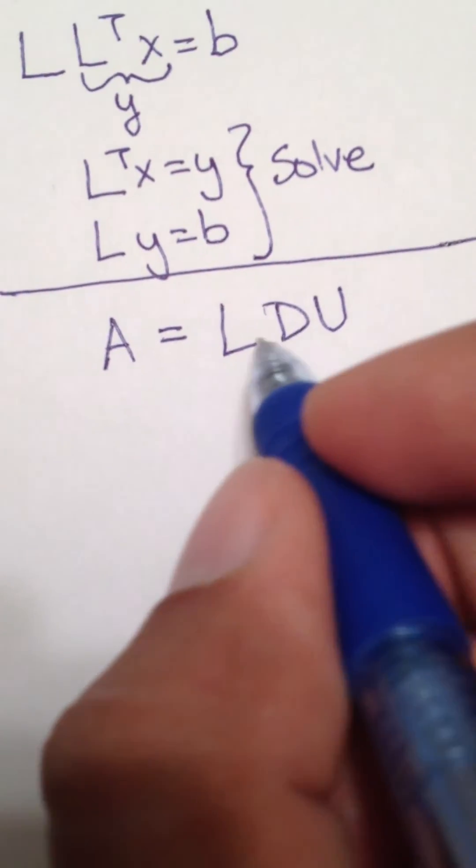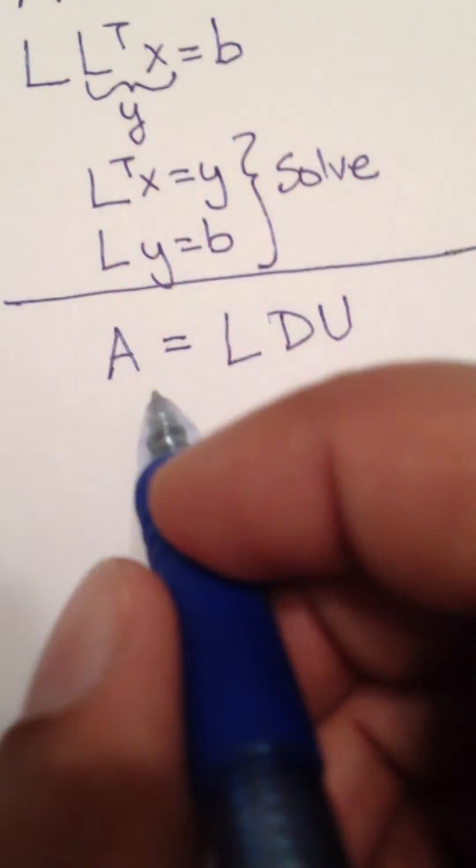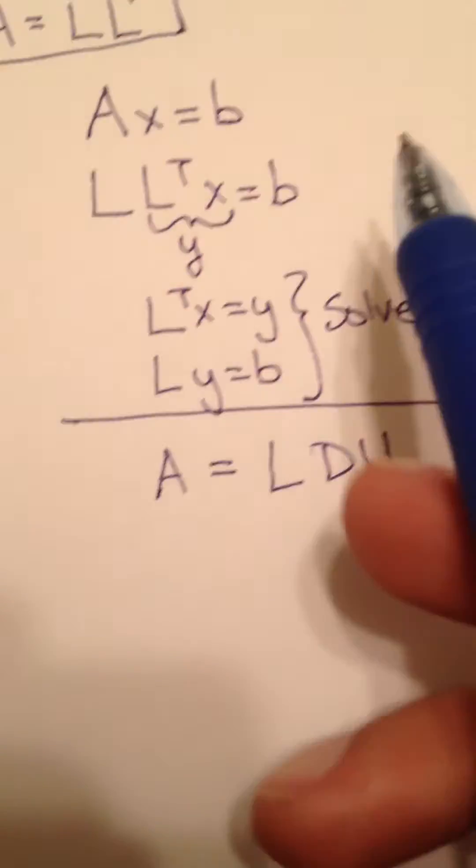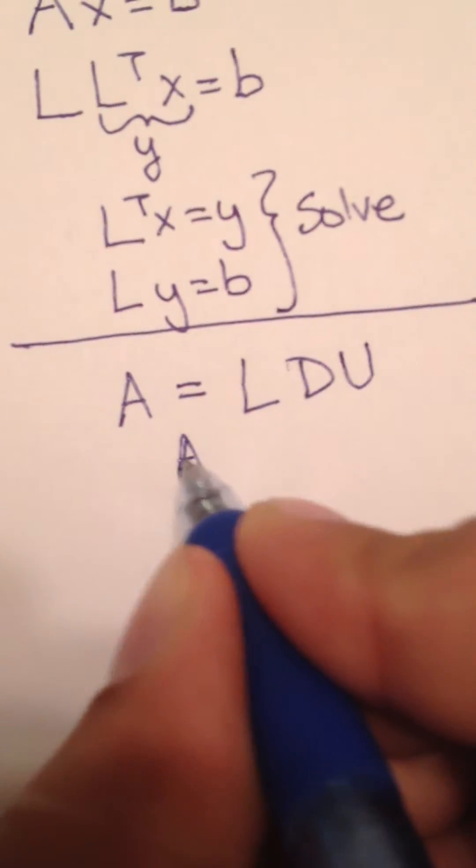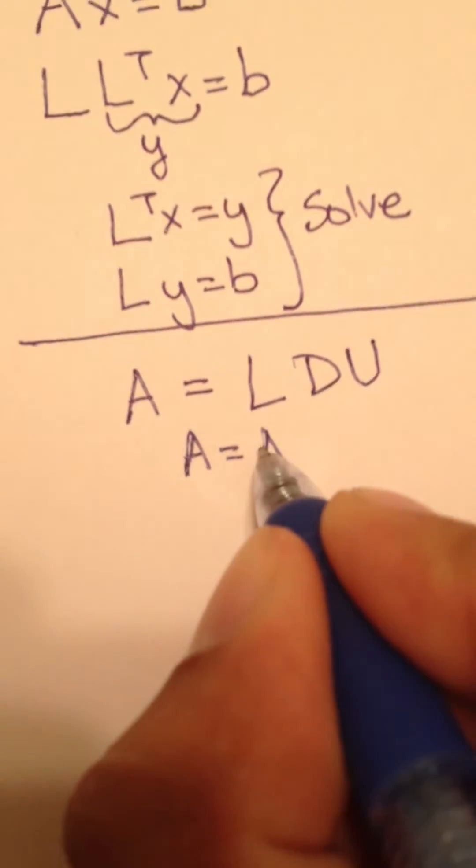But now, let's say that for this L D U case, in the case of Cholesky, it's symmetric, which means A is equal to A transpose.